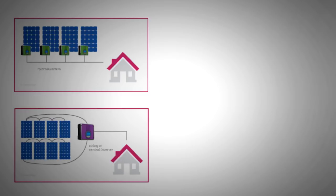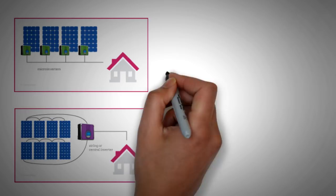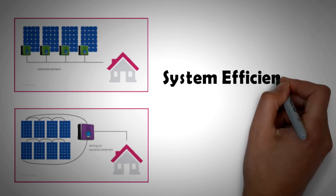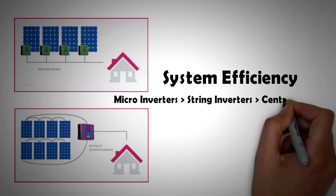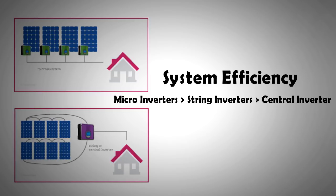So micro-inverters allow panels to operate at their maximum power point independent of all other panels in the system. Essentially, micro-inverters did the same thing to string inverters that the string inverters did to central inverters a decade ago. That is, they became a better, more reliable, and more efficient replacement for their larger counterparts.